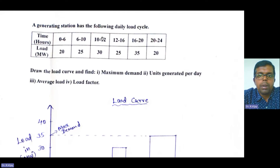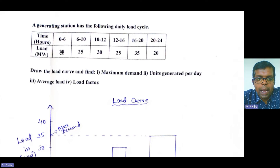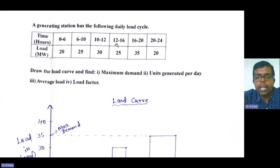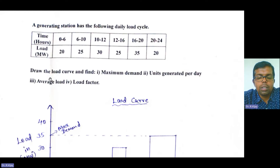Today we are going to solve a problem on the load duration curve. A generating station has the following daily load cycle: 0 to 6 hours is 20 megawatt, 6 to 10 is 25 megawatt, 10 to 12 is 30 megawatt, 12 to 16 is 25 megawatt, 16 to 20 is 35 megawatt, and 20 to 24 is 20 megawatt. We have to draw the load curve and find the maximum demand, units generated per day, average load, and load factor.